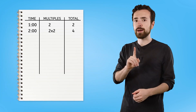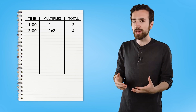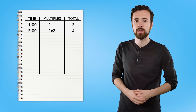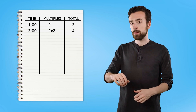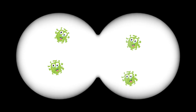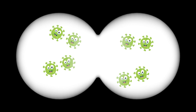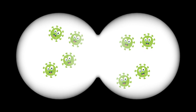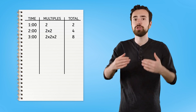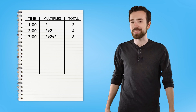At 1pm, I started with two bacteria. At 2pm, I had two times two, or four bacteria. It's now almost 3pm, so let's see what happened. Wow! The four bacteria have doubled to eight bacteria. So at 3pm, I now have two times two times two, or eight bacteria.